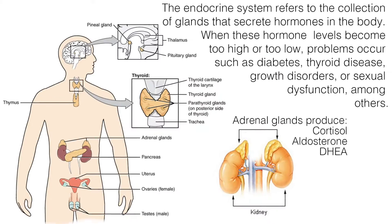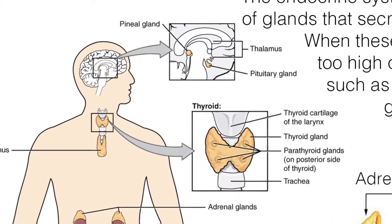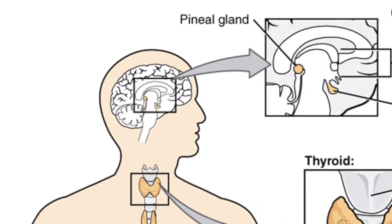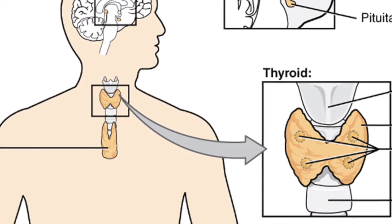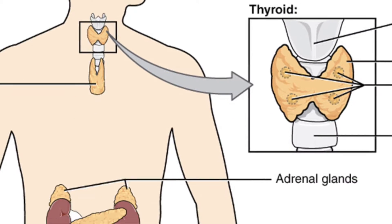Welcome to this video tutorial on Addison's disease. Addison's disease is a rare chronic endocrine system disorder that occurs when the adrenal glands do not produce adequate amounts of steroid hormones. The endocrine system refers to the collection of glands that secrete hormones in the body.